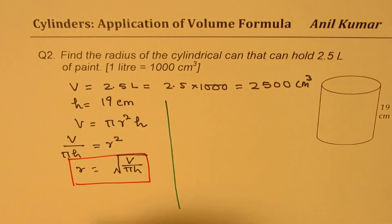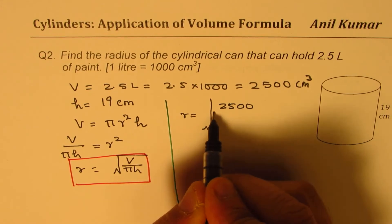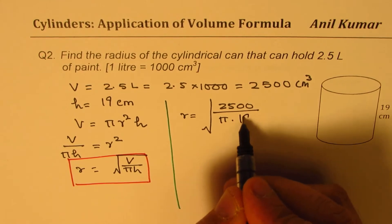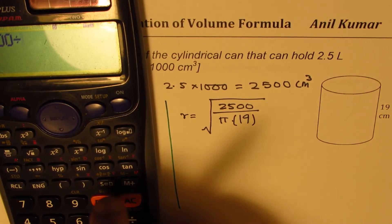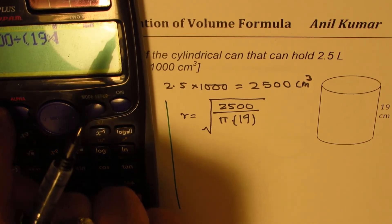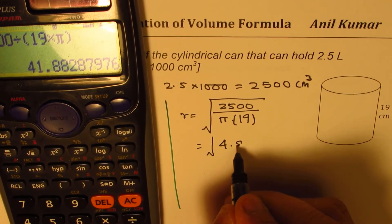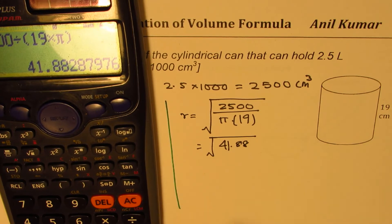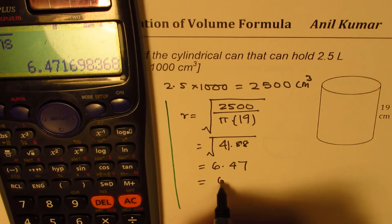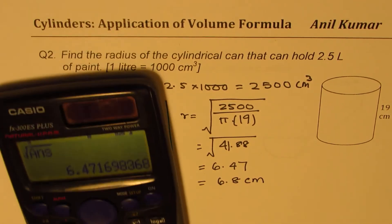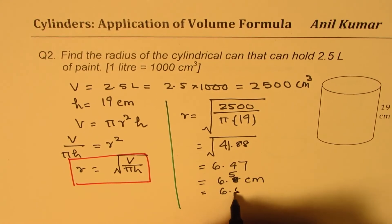Using the formula, radius equals square root of 2,500 divided by pi times 19. We calculate 2,500 divided by 19 times pi, which gives 41.88. We then do square root of 41.88, and that gives us 6.47, which rounds to 6.5 centimeters.